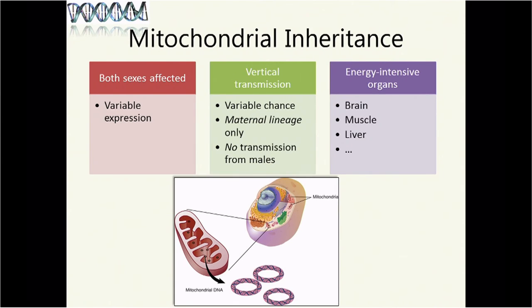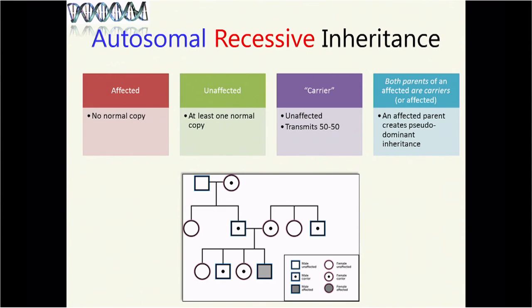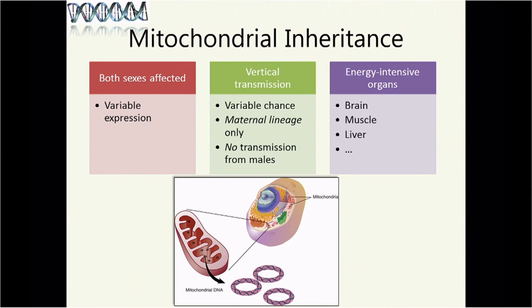Mitochondrial inheritance. We touched on it at the very beginning. Both sexes are affected. It has variable expression because there are lots of mitochondria passed on. Some of them may have a problem and others don't. It's vertical transmission, meaning in a pedigree it's passed down through the generations, but it's only passed down through the maternal lineage because everybody's mitochondria came from their mother's egg. My father's sperm has mitochondria, but only in the tail to make the tail spin around. It's the energy source, but those don't ordinarily get dropped into the egg that becomes the zygote that becomes the human. The disorders affected by mitochondrial inheritance are those in energy-intensive organs: brain, muscle, liver, because it's an energy factory.